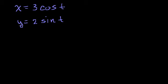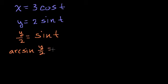So let's solve for t here. We could do it in either one. They're equally complex. So if we solve for t here, we would say divide both sides by 2, so you would get y over 2 is equal to sine of t. And then you would take the arcsine of both sides, or the inverse sine of both sides, and you would get arcsine of y over 2 is equal to t.